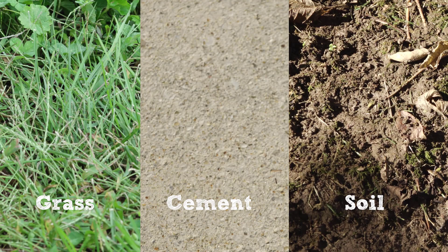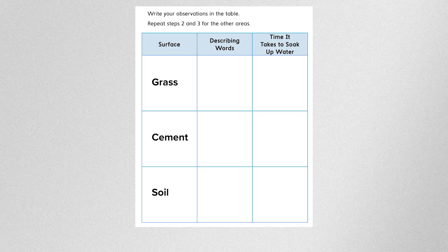In this video, you'll observe surfaces that can be found around a school or neighborhood. You'll observe a grass-covered area, a cement sidewalk, and a soil-covered area. Record each of these three areas on the left side of your table. When you're finished, select Continue.